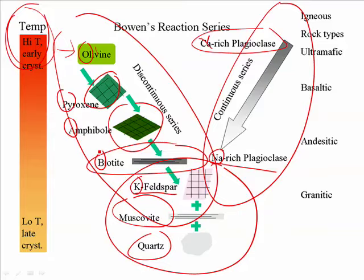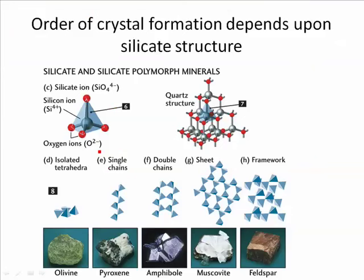Actually, all of this is not as confusing as it sounds, because it is all related to the crystalline structure of the silicates. And you already know that, don't you? Good old silicon tetrahedron, SiO4. And olivine has the isolated tetrahedra.